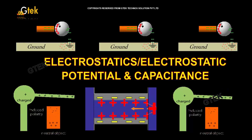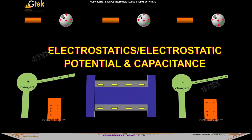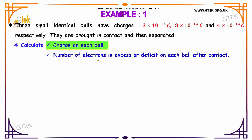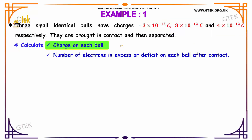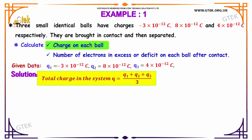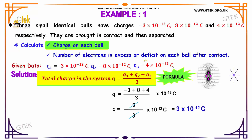We will see electrostatic potential. Three small identical balls having charges of minus 3 into 10 power minus 12, 8 into 10 power minus 12, and 4 into 10 power minus 12 Coulomb are brought in contact and then separated. We need to identify the charge on each ball and the number of electrons in excess or deficit on each ball after contact.